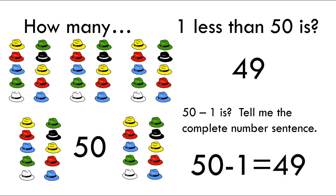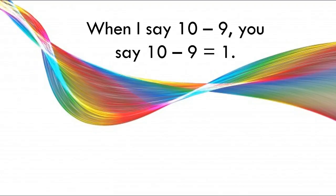Okay, so for this next activity: when I say 10 minus 9, you say 10 minus 9 equals 1. I'm going to tell you the beginning of the number sentence and then you're going to tell me the entire number sentence including the answer. Let's try this — 10 minus 9 equals — go ahead and say it.